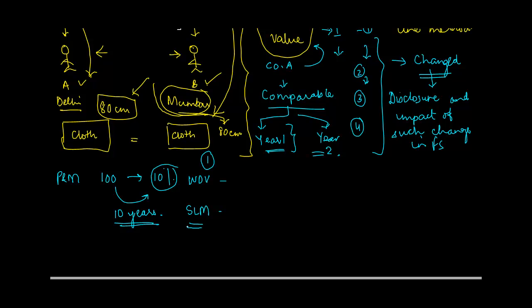When you charge depreciation under straight line method, what you will do is you will divide the total price by number of years, and whatever is the amount you get, you charge that much depreciation for each of these 10 years. So under SLM you will charge 10 rupees each for each of these years as depreciation.